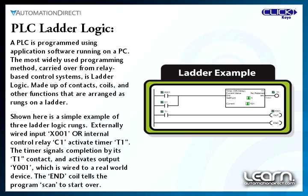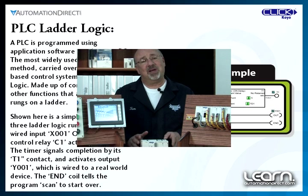In the simple example shown here, a timer is activated by either an external device wired to input X001 or an internal control relay labeled C1. Notice the logic OR in the example. After a preset amount of time, the timer signals completion by closing its T1 contact and activating output Y001, which controls a real-world device wired to the PLC's output terminals. An end coil is shown in the last rung to tell the program to go back to the start and check the rungs in order again.